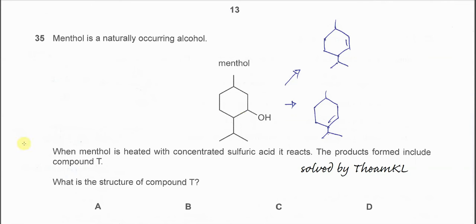Question 35: When menthol is heated with concentrated sulfuric acid, it reacts. The products formed include compound T. So what is the structure of compound T?